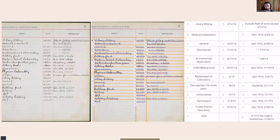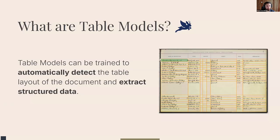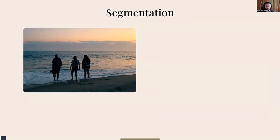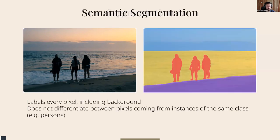In this example it looks something like this. Table models automatically detect tables and extract the structured data, so you get a table as output from these models. To understand how table models work, it's important to understand what we're doing from a technical perspective — it's called segmentation. We take the image given to the model and the model tries to segment it, identifying different parts of the image and what each part represents.